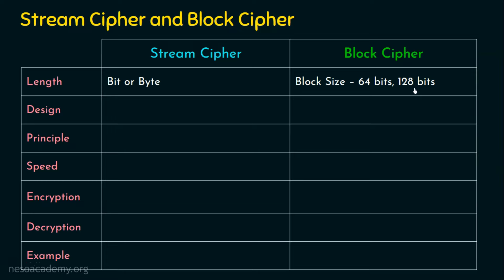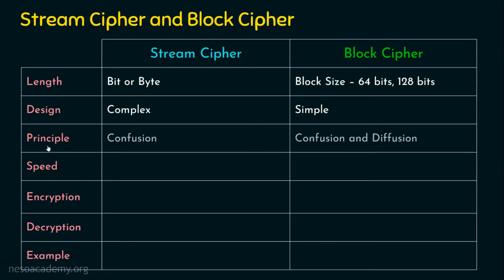Coming to the design of stream cipher, it uses a complex design because it takes an input bit and generates an output bit, making the operation complex. Whereas in block cipher, we follow a specific design to generate the ciphertext — this will become clearer when we study DES (Data Encryption Standard) and AES (Advanced Encryption Standard). In terms of principle, stream cipher uses the confusion principle only, whereas block cipher uses both confusion and diffusion.